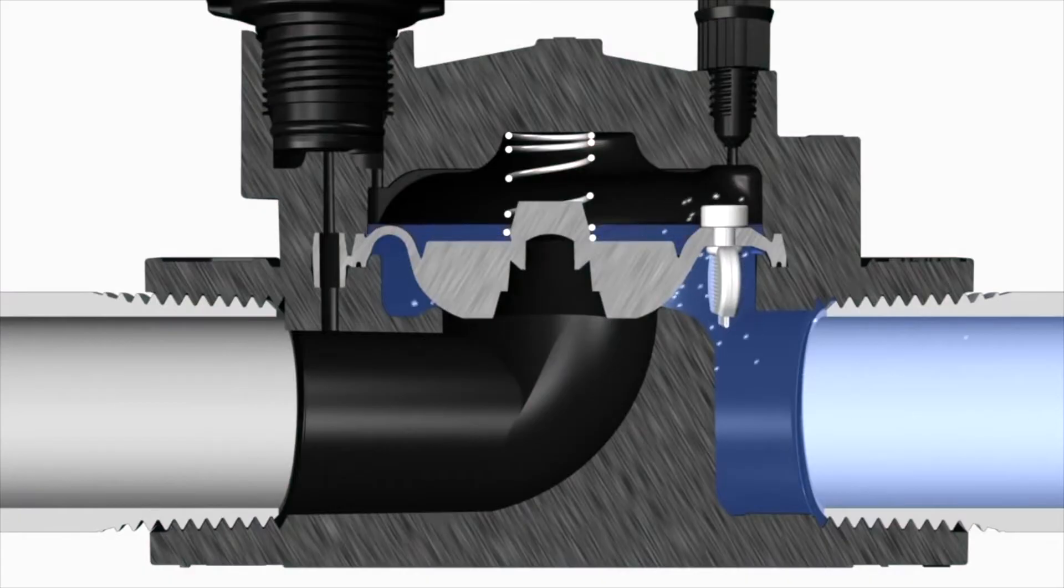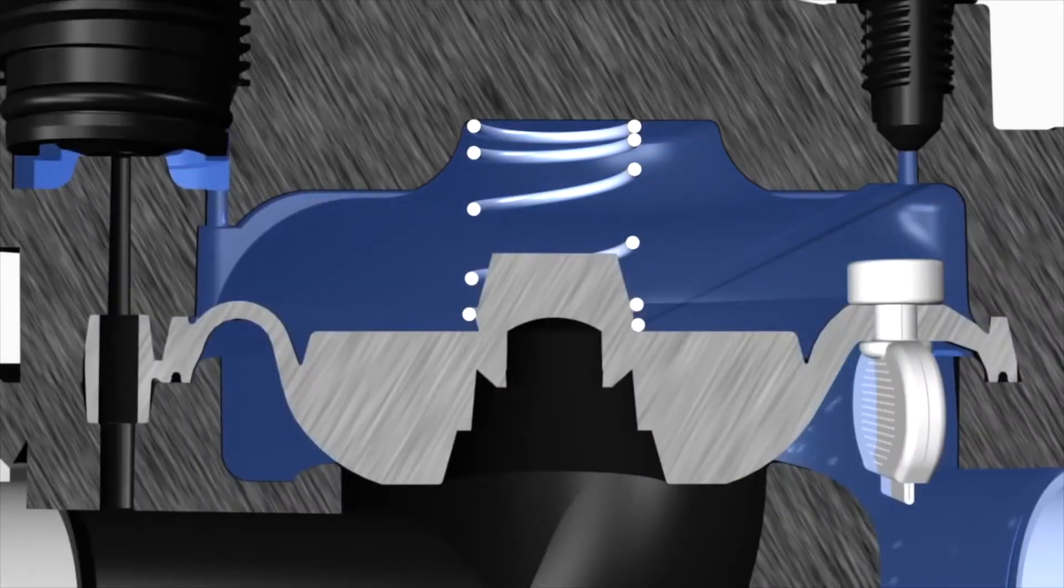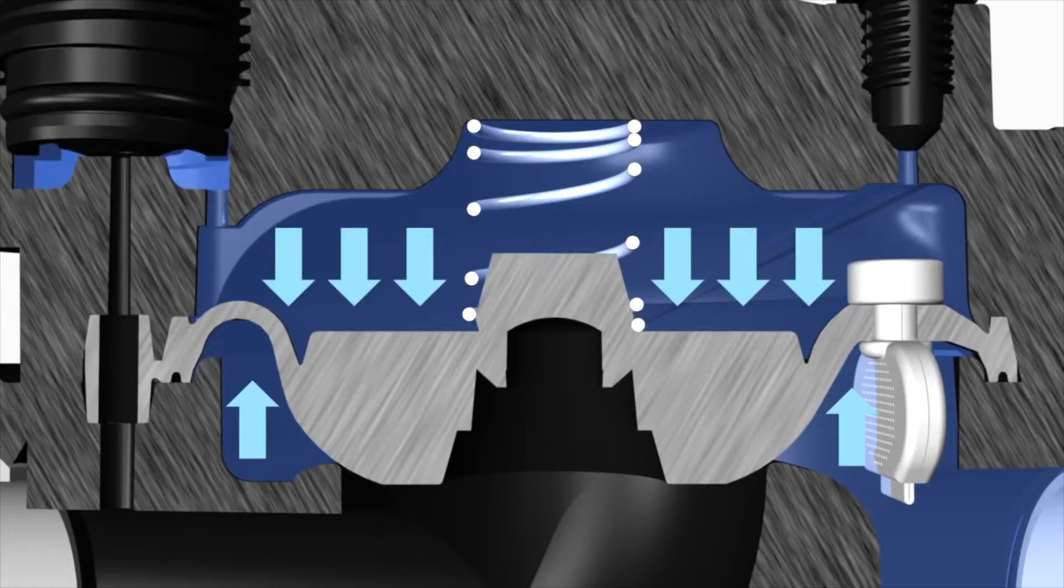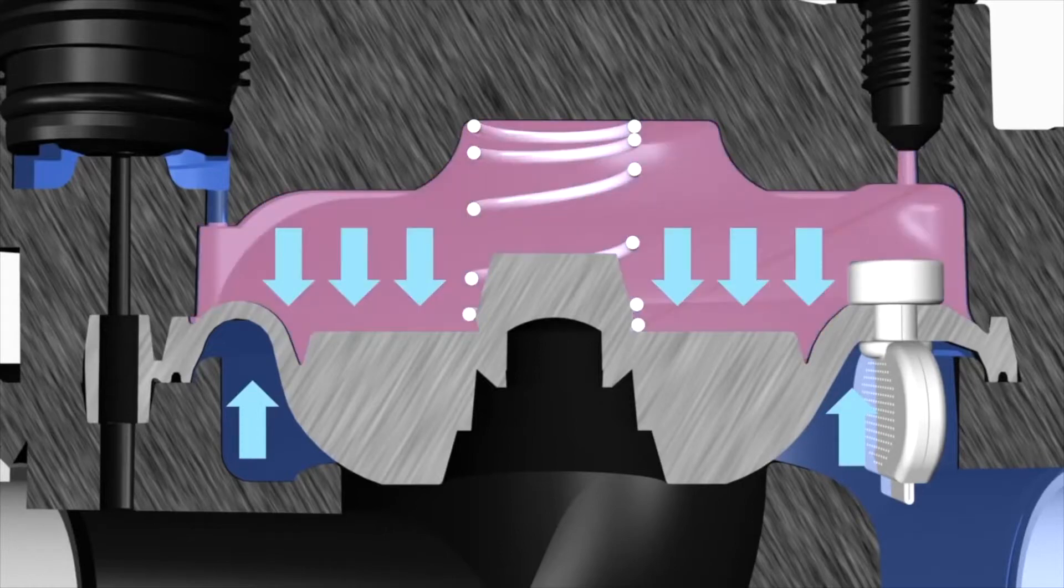The water enters the bonnet chamber via the pilot flow filter and the force of this water pressing down on the diaphragm holds the diaphragm in place.